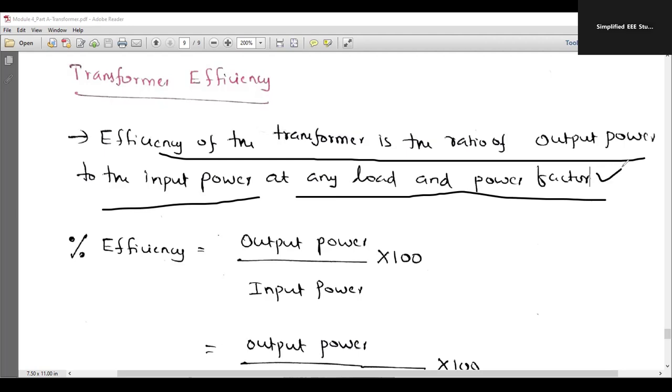Power factor is most important. Cos phi, why you have to consider it may be like lagging or leading. However, you have to mention the value of power factor. These are the things which are included in the transformer efficiency.